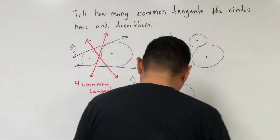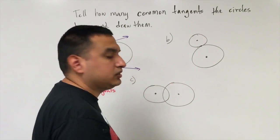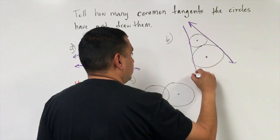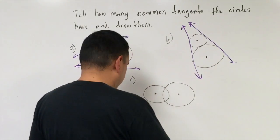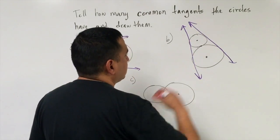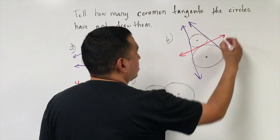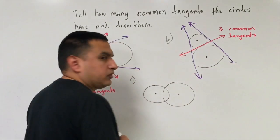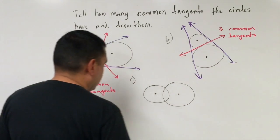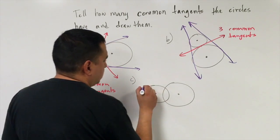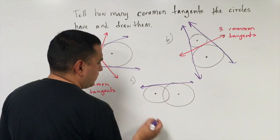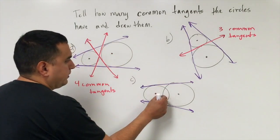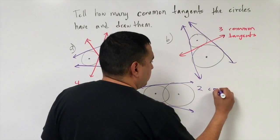For two circles touching at one point, I get two external tangents plus one tangent line going right through that touching point — so three common tangents. For two overlapping circles, I can only draw two external tangents since I can't place any internal tangents through the overlapping region — so two common tangents.